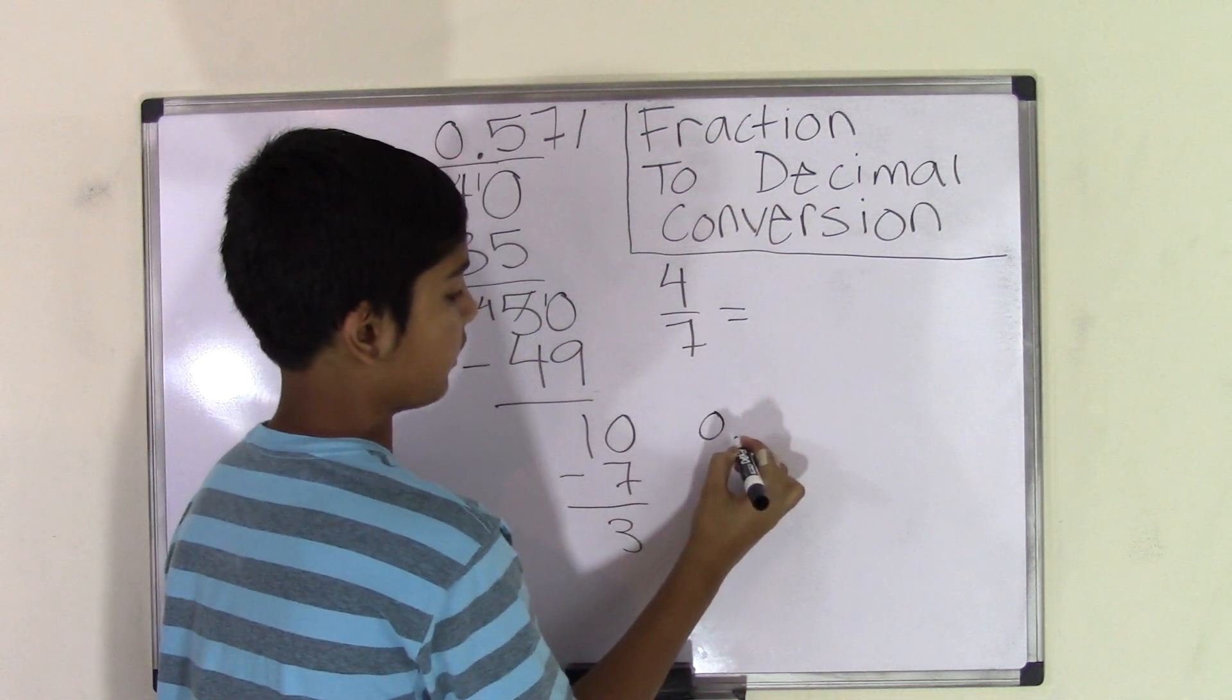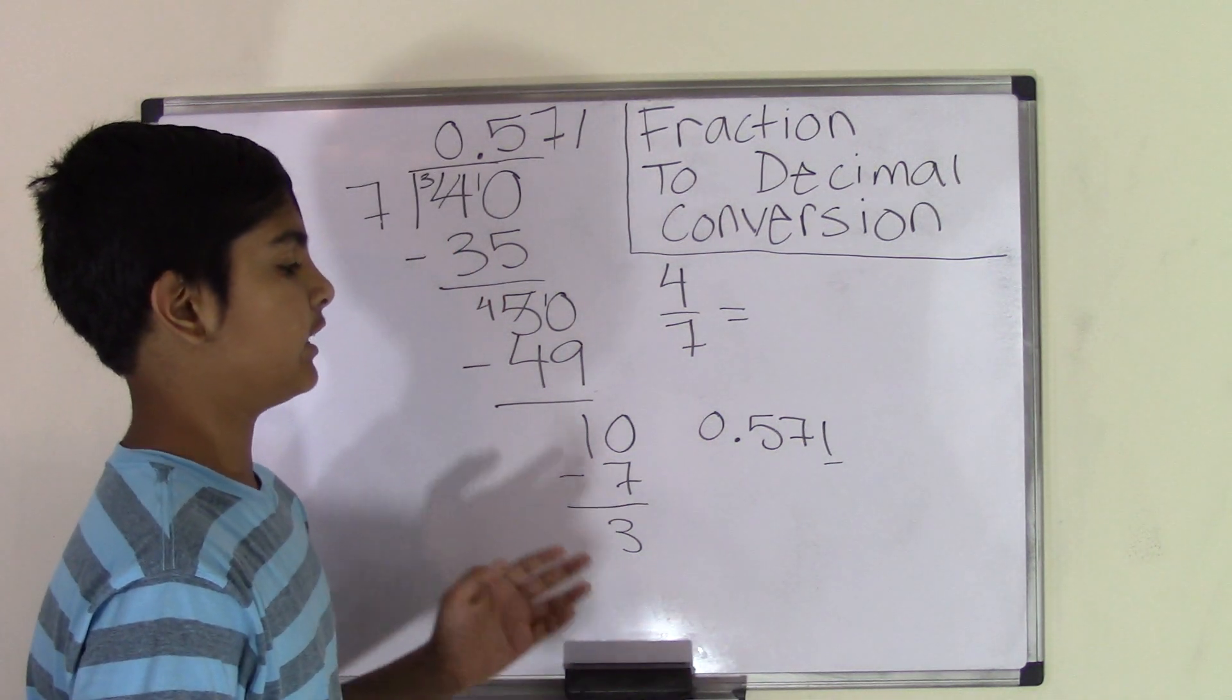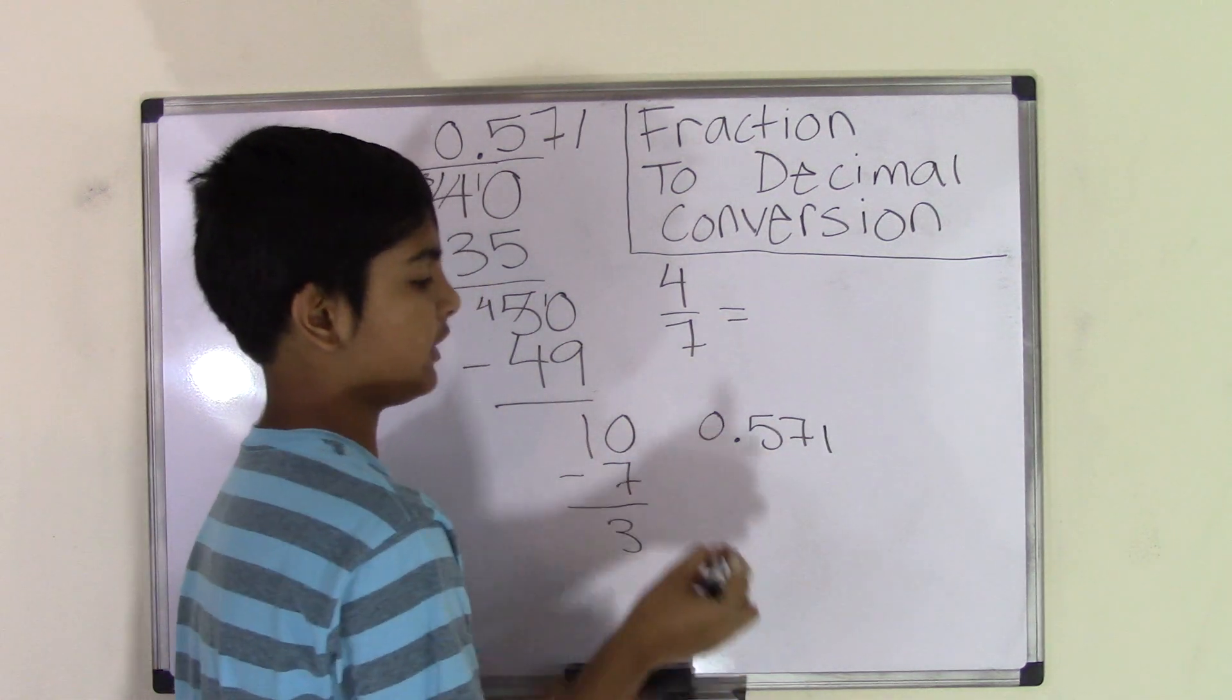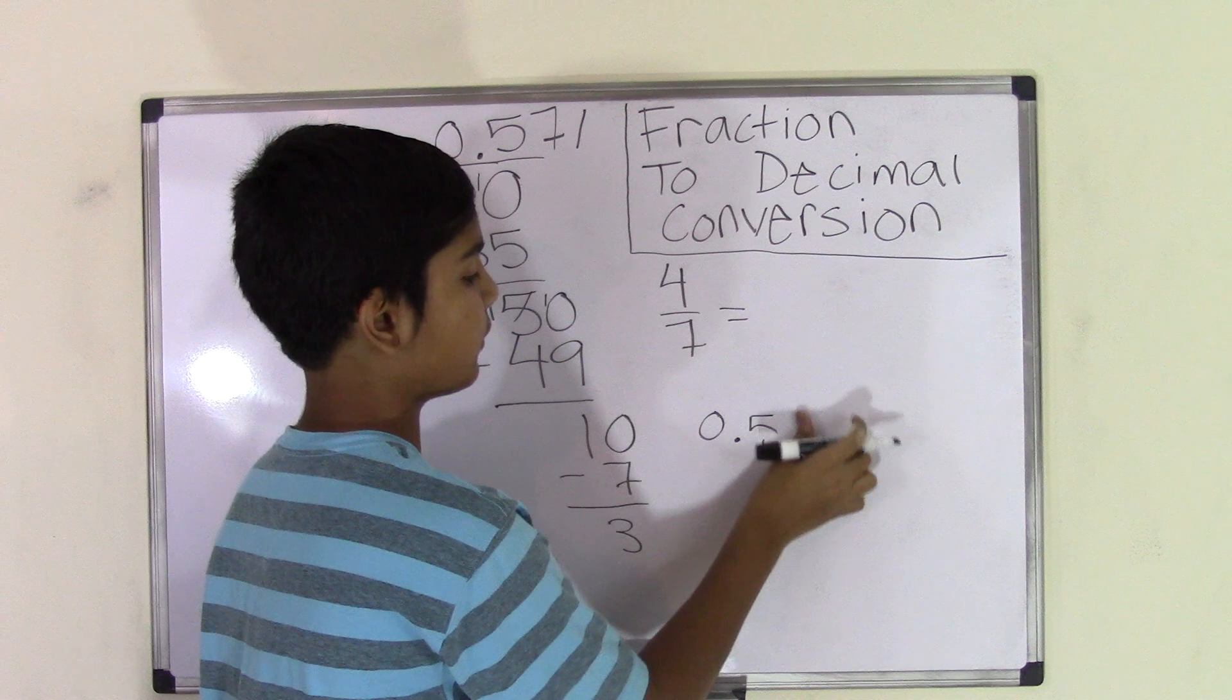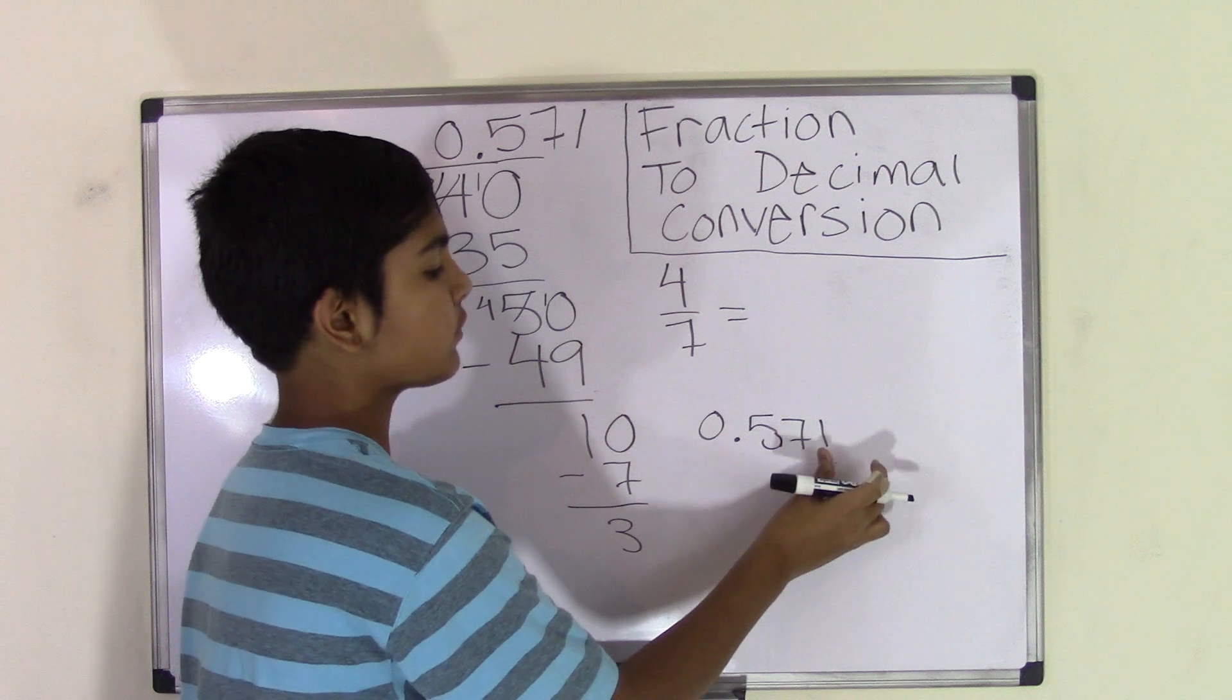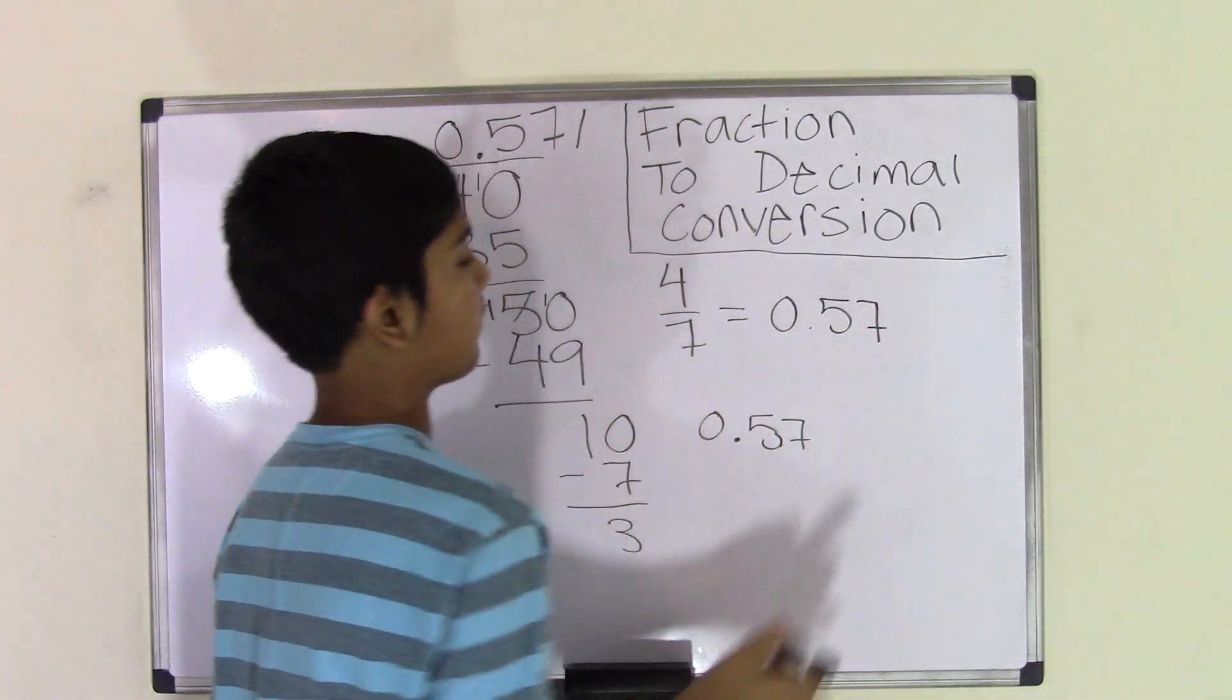So now we have the number 0.571, and we need to look at the last number, which is the number 1. Now if the number 1 is less than the number 5, then we'll make the number 0.571 into a 0.57. Now if the number 1 is greater than the number 5, then we'll make the number 0.571 into a 0.58. But since we know that the number 1 is less than the number 5, so we'll eliminate the number 1, and we'll keep the number as 0.57. And 0.57 is the decimal number that is converted from the fraction 4 over 7.